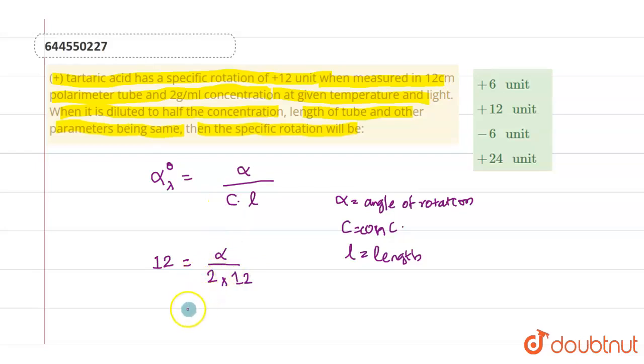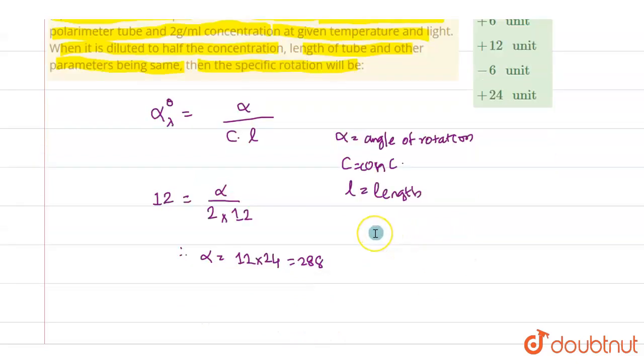From this we can find the value of alpha. Alpha equals 12 into 24, which equals 288.